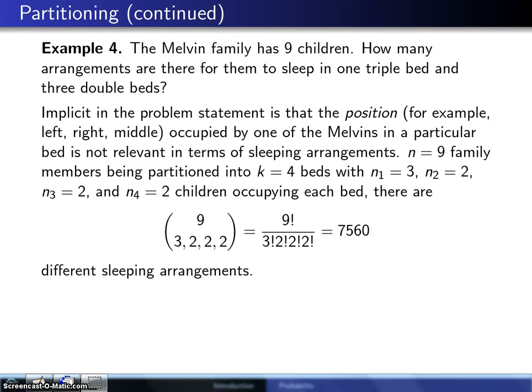The Melvin family has nine little children, as Mr. Melvin used to put it, three and a half dozen children. How many arrangements are there for them to sleep in one triple bed and three double beds?